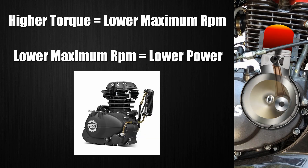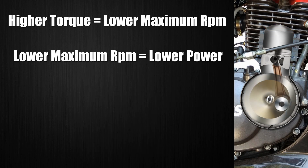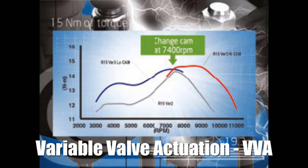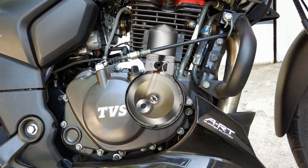This is the Royal Enfield engine — it has a higher RPM but low torque. This is the R15 V3 with variable valve actuation. The lower and middle RPM torque provides high-end power, and there is an important difference in torque delivery between these engines.